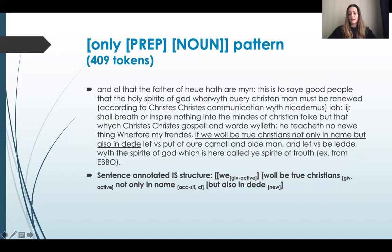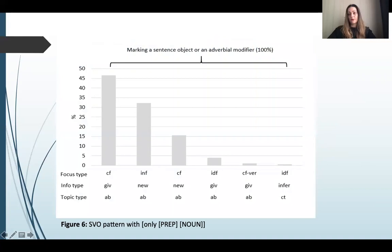The contextual analysis of tokens after the automated search shows that in 90.6% of instances 'only plus preposition' is followed by noun phrases, while the rest of the examples are eliminated due to the fact that the noun position is occupied by a verb. Figure 6 shows the frequency of various focus types and their informational status in the discourse. The 'only plus preposition plus noun' model is often employed when noun phrases render new information and informational focus, which is its distinguishing feature compared with the previous pattern.